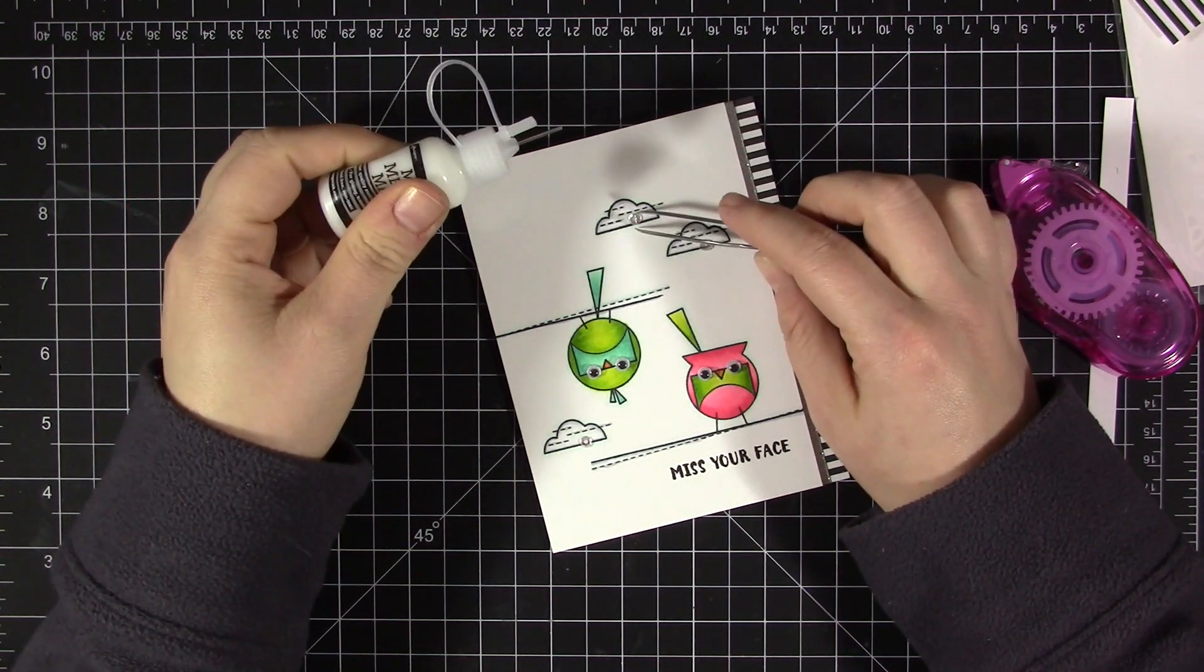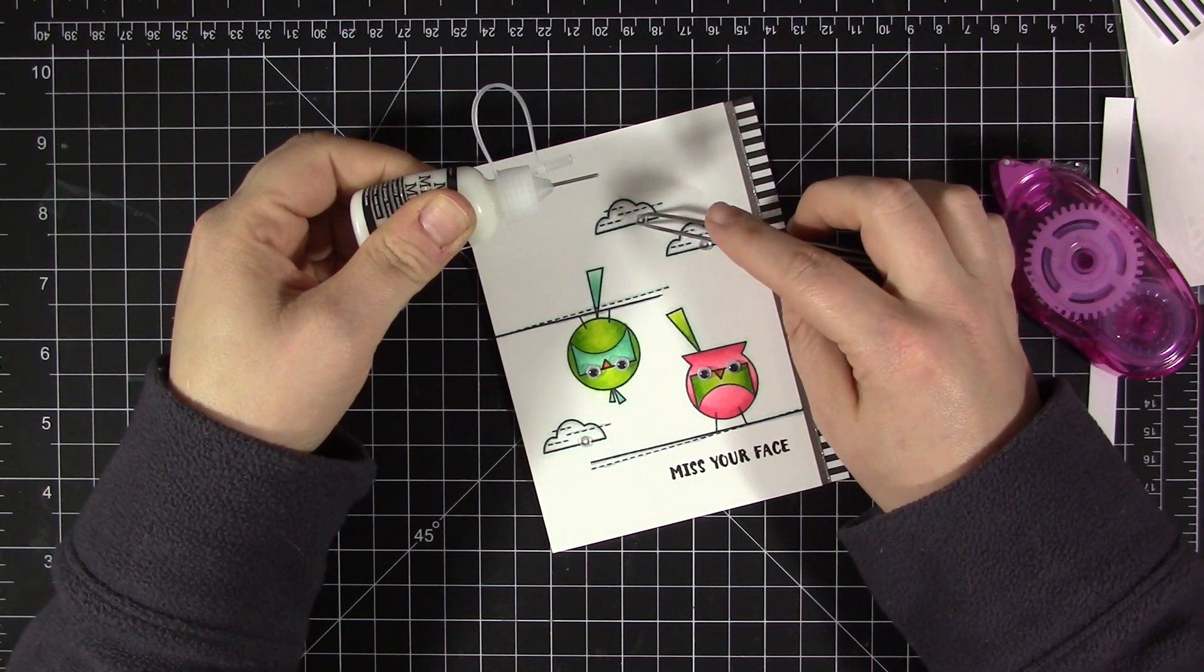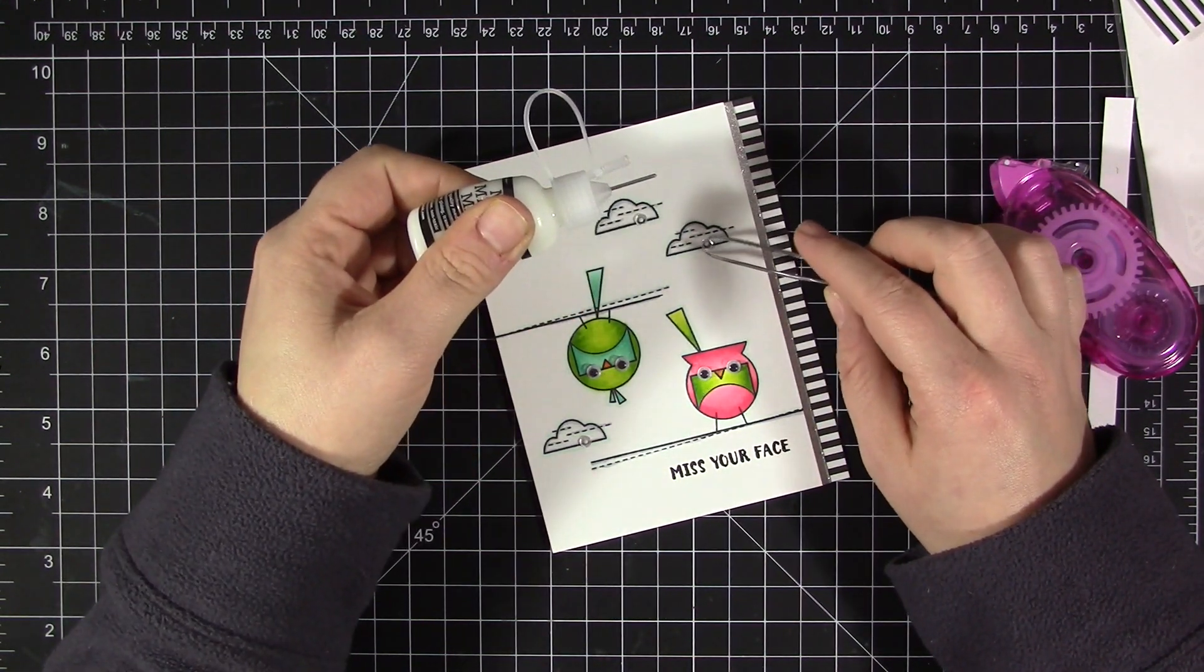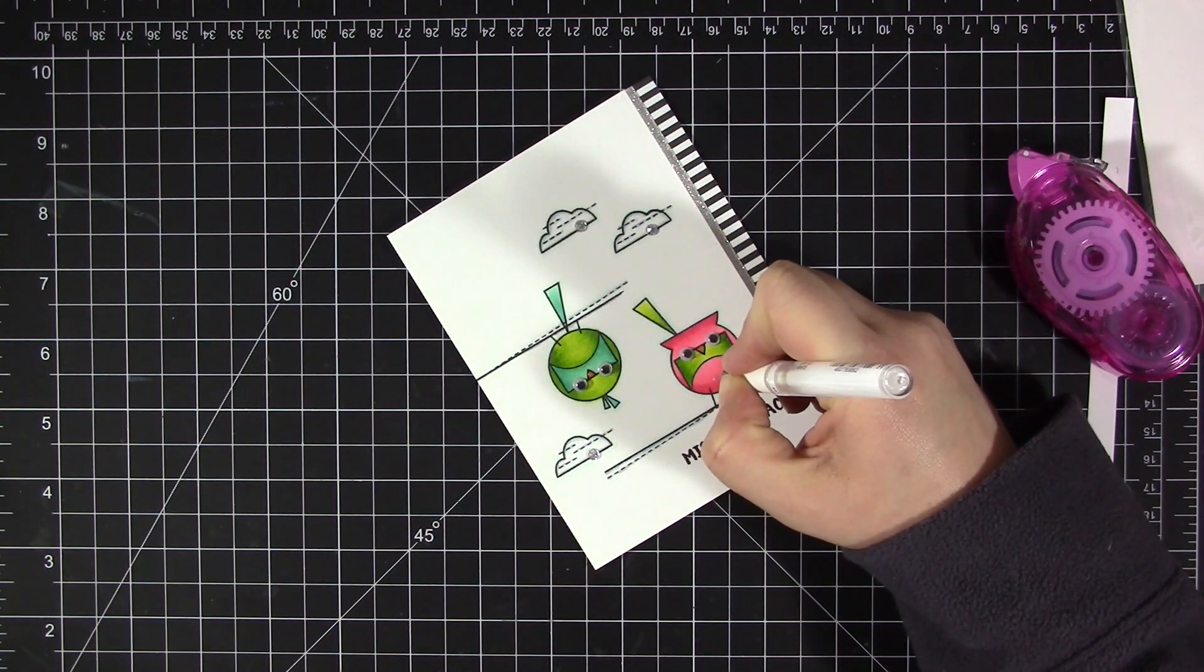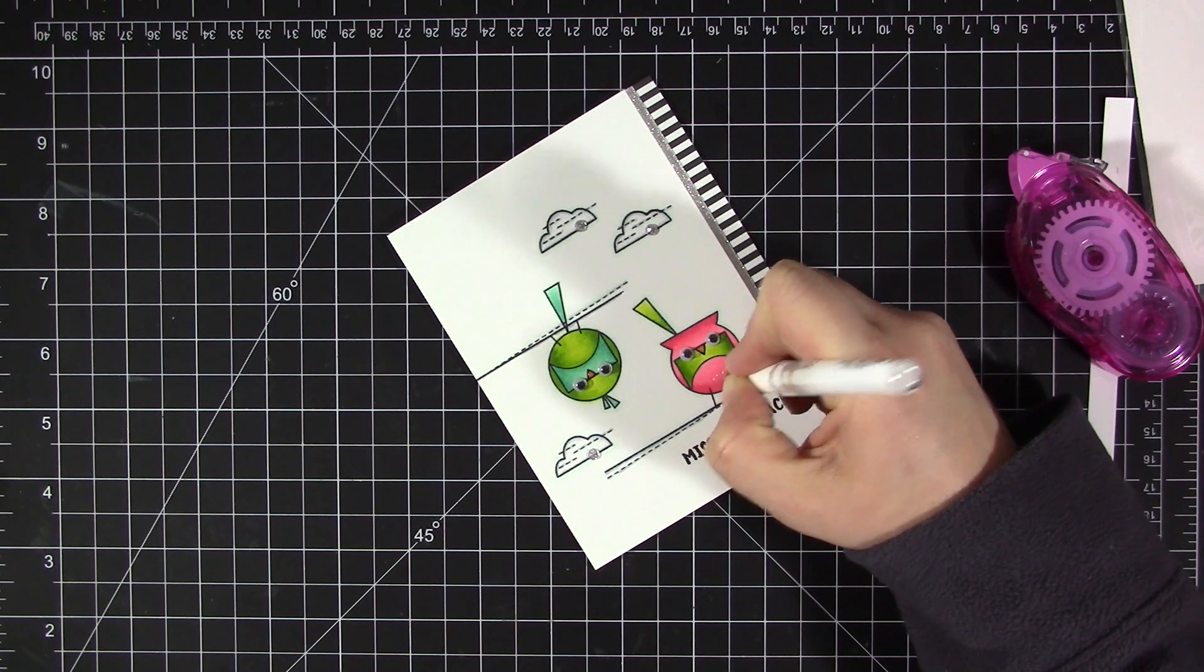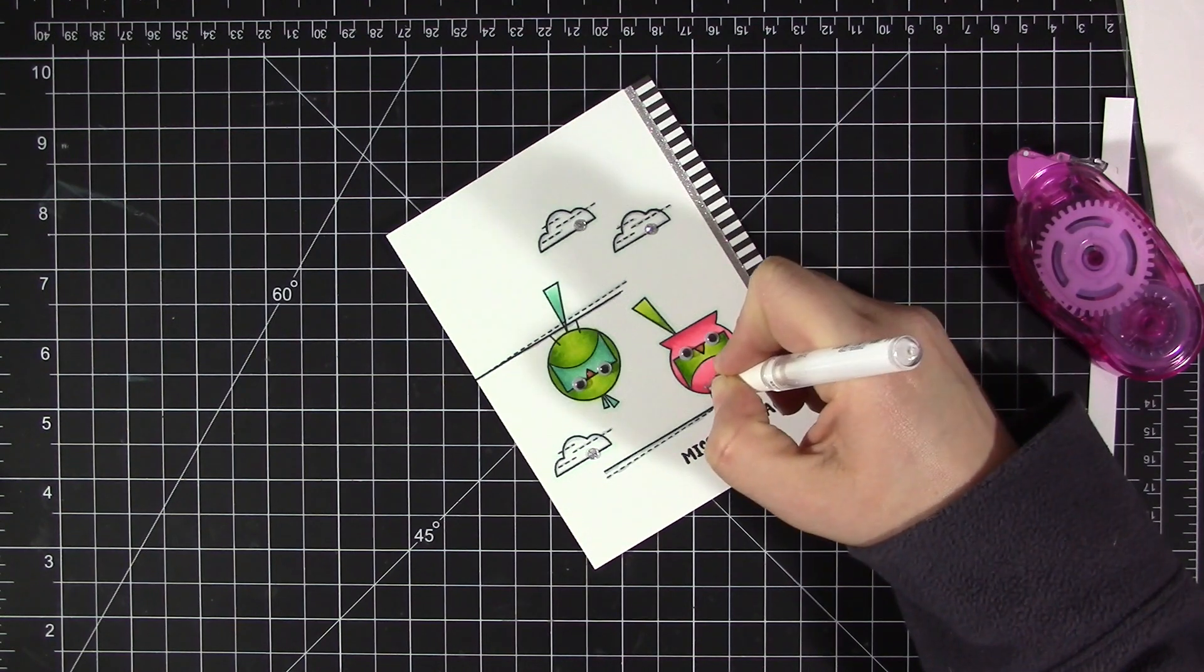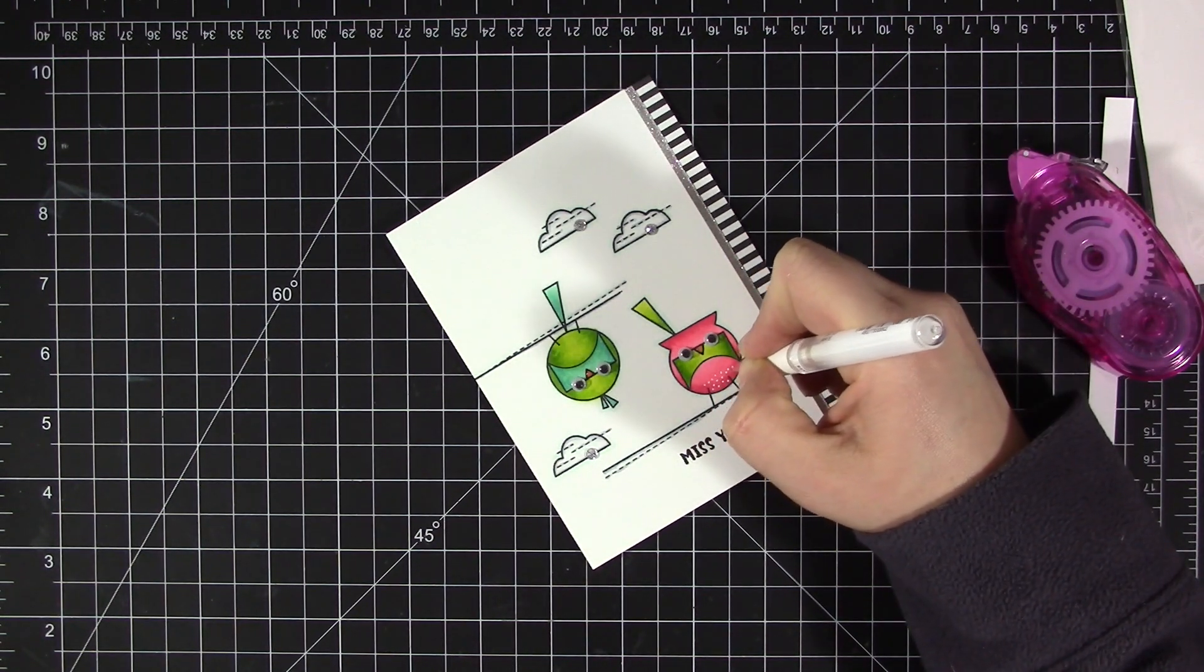I'm also adding one clear sequin to each of the clouds, only adding the three there on the bottom of each cloud in the exact same spot. Then I'm going to fill the centers of those sequins with silver Stickles, which is what I like to do with my sequins. I'm just going to add a tiny bit more detail to the birds by using a white gel pen to add some dot detail on the tummies of both of the birds.